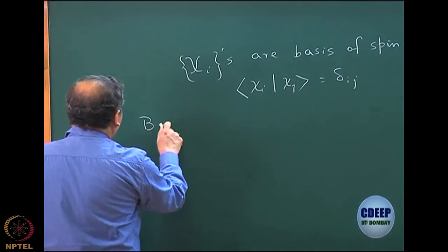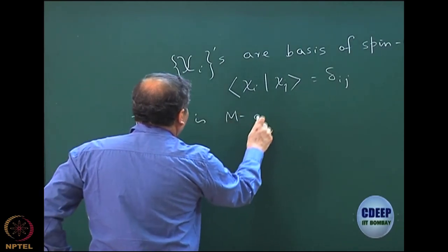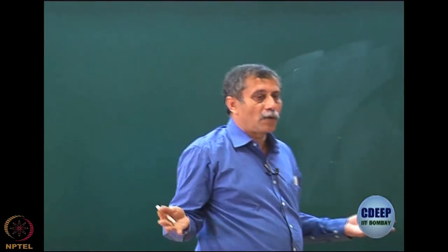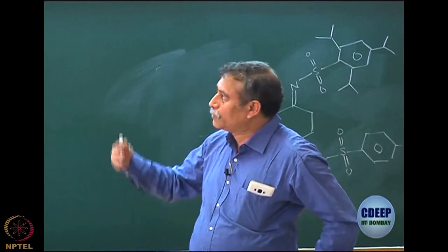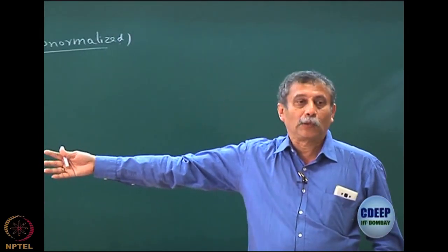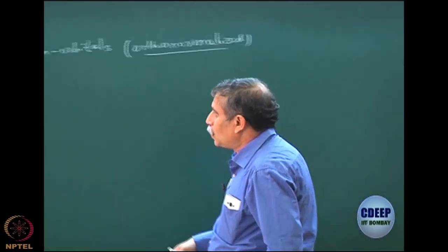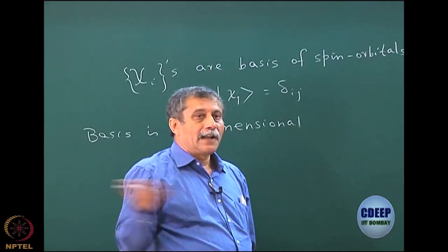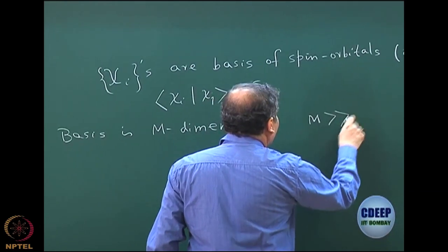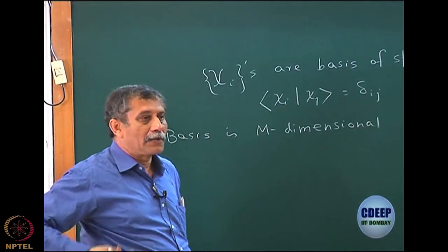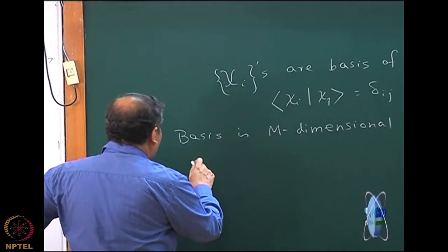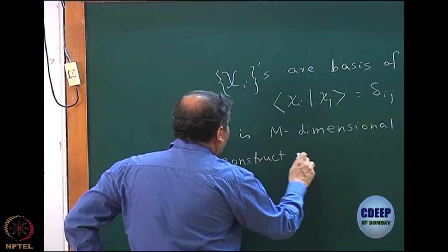Let us say that my basis is m-dimensional. We will not worry about completeness of the basis because we have already discussed that completeness requires infinite dimension, which is very often not doable. So let us assume it is m-dimensional where m is sufficiently large, as large as possible. This is where the computer plays a very important role. When you write a quantum chemistry program, the larger the basis you use, usually you should get a better result. Typically m should be much larger than n, where n is the number of electrons.